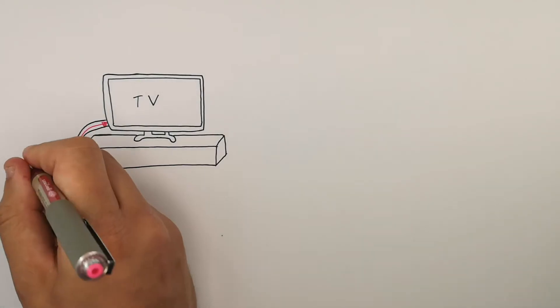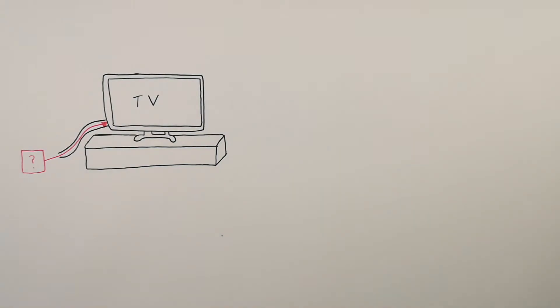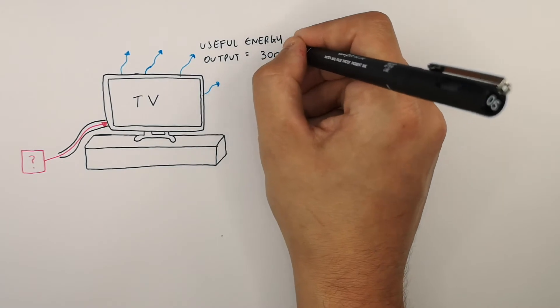This is a television. We're trying to work out the total energy input to the television. The useful energy output is 3,000 joules.